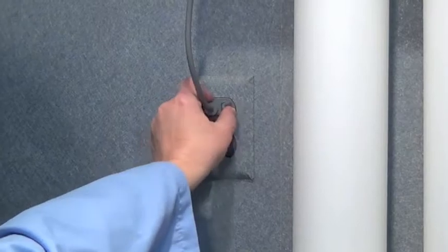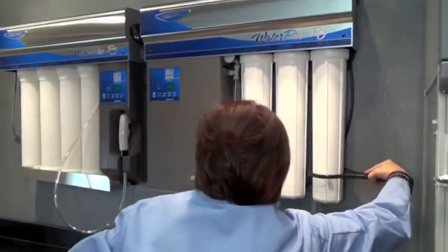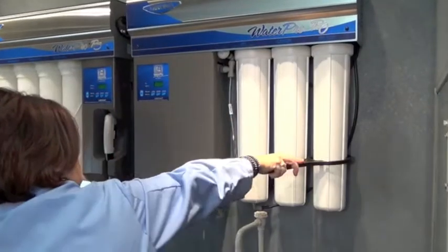Unplug the unit from the electrical outlet. With the spanner wrench provided, remove the first bowl on the right to replace the pre-filter.